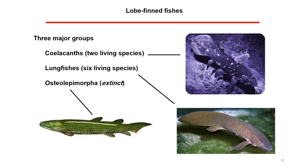Coming back to extant fishes, we would hope to get information relevant to the transition from living in water to living on land. Fossils can provide some information, but the fossil record is very incomplete, so we should look at living organisms. The lobe-finned fishes exist in three groups: the coelacanths, of which there are two living species; the lungfishes, of which there are six living species; and the Osteolepiformes, which are extinct — there are no living examples of that third group.